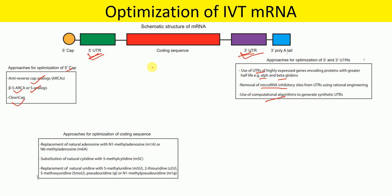For optimization of the coding sequence, we can replace natural adenosine with N1-methyladenosine or N6-methyladenosine. We can substitute cytidine with 5-methylcytidine. Similarly, we can substitute natural uridine with 5-methyluridine, 2-thiouridine, 5-methoxyuridine, pseudouridine, or N1-methylpseudouridine.